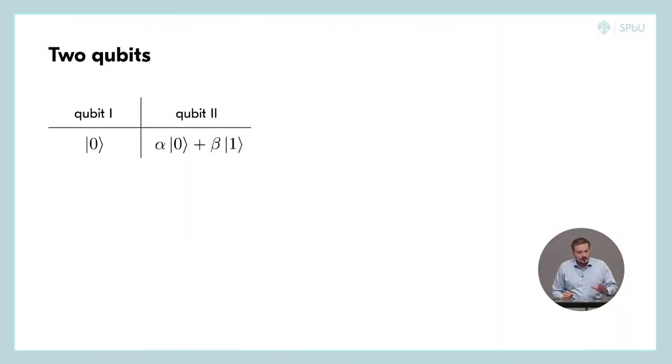Now, imagine that one of the qubits have this superposition before the measurement. Can we describe this state before the measurement in the space we just constructed? Yes, we can. We can describe it like this. We used two of the vectors we just introduced in the previous slide to describe the state of this system.